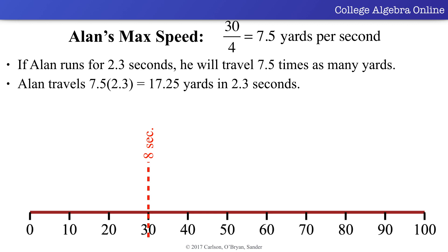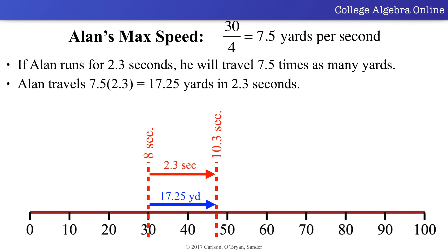Since Allen is at the 30 yard line 8 seconds after he started running, and runs 17.25 yards in the next 2.3 seconds, Allen is at the 30 plus 17.25, which equals 47.25 yard line, 10.3 seconds after he started running.